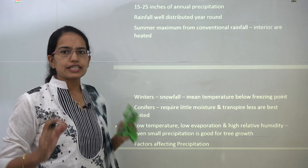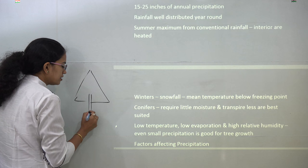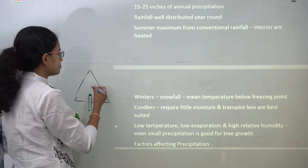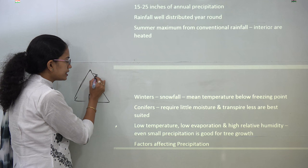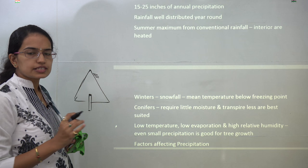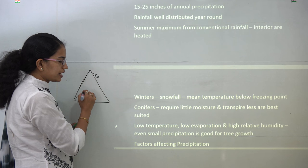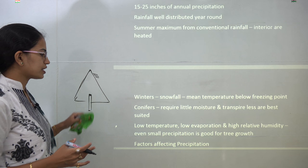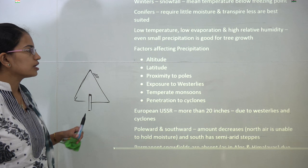The vegetation in this region is very specific. Conifers — like Christmas trees — are the primary vegetation seen here. Conifers are unique because they have needle-shaped leaves, which means their requirement for transpiration is very low. They are well adapted to regions with even low precipitation, requiring very little moisture. So low temperature, low evaporation, and high relative humidity, along with small precipitation, are key conditions for coniferous growth.